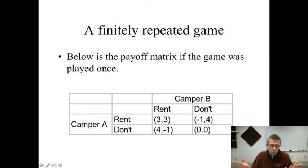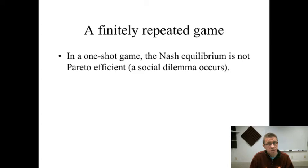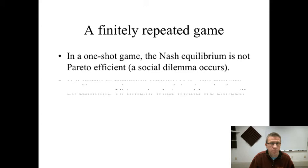With this particular payoff matrix, what's the Nash equilibrium? For Camper A, 4 is better than 3 and 0 is better than negative 1 — dominant strategy is not to rent. The game is symmetric, so clearly Camper B is the same: 4 is better than 3, 0 is better than negative 1. Both not renting is the Nash equilibrium. It's not Pareto efficient, so this is what we can call a social dilemma.